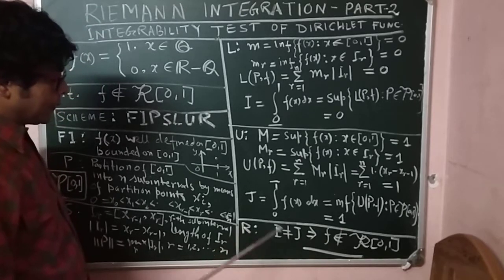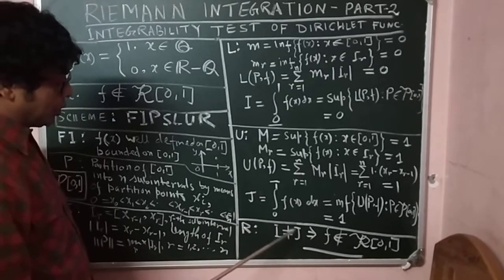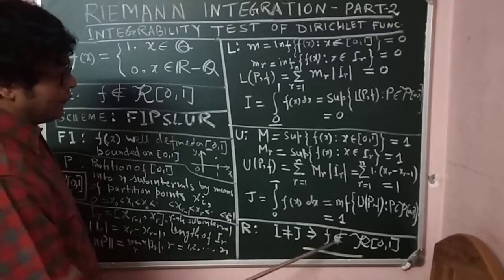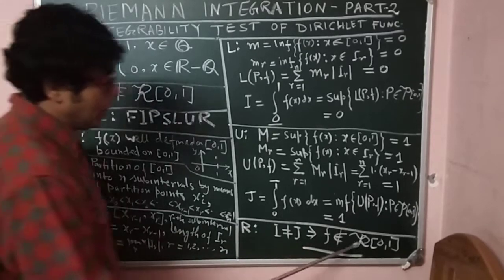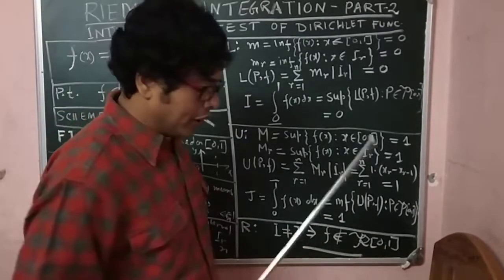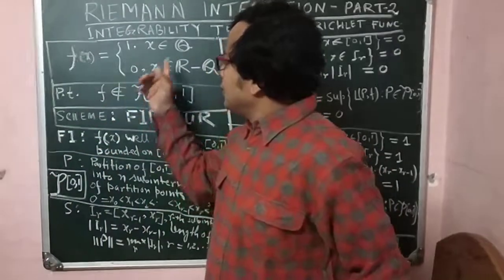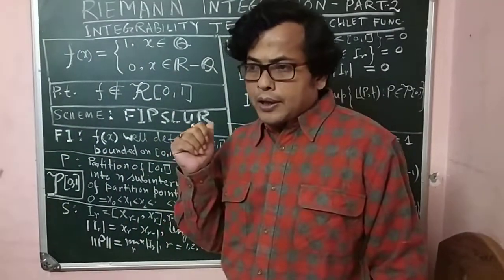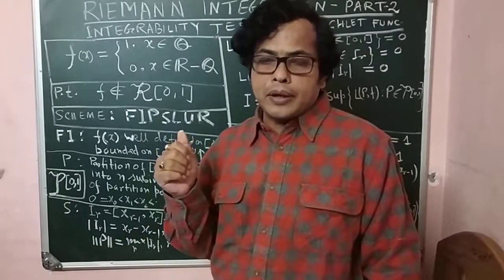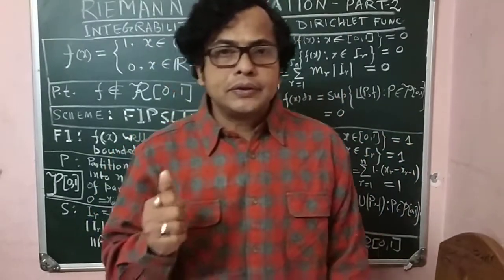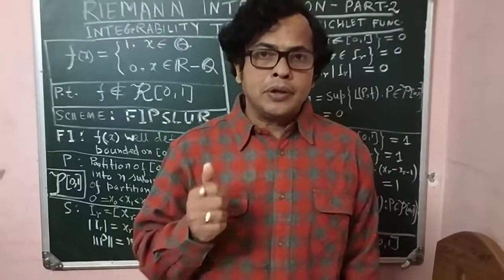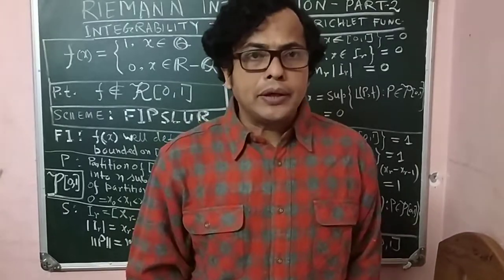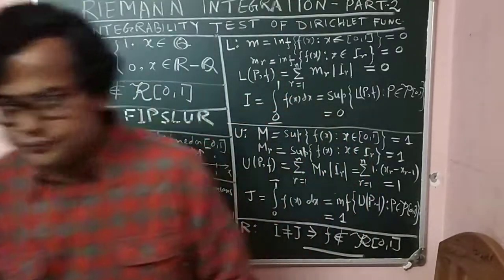What is R — Riemann integrability? By our definition, since I = 0 and J = 1, we have I ≠ J. This means f is not Riemann integrable, so f does not belong to R[0,1]. The Dirichlet function is a very important example; its graph cannot be drawn, and it is not Riemann integrable. Thank you very much.